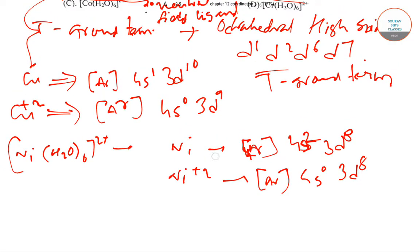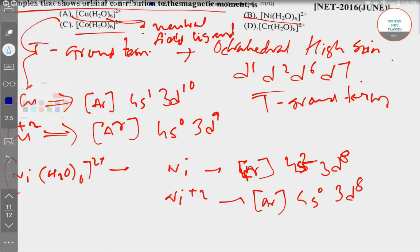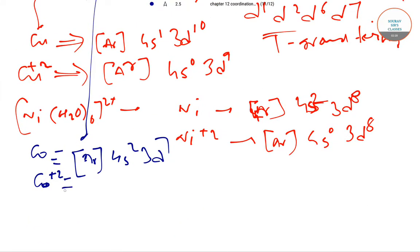Coming to option number C we have [Co(H2O)6]2+ which will have Co which has electronic configuration of [Ar] 4s2 3d7. So Co+2 will have an electronic configuration of [Ar] 4s0 3d7.